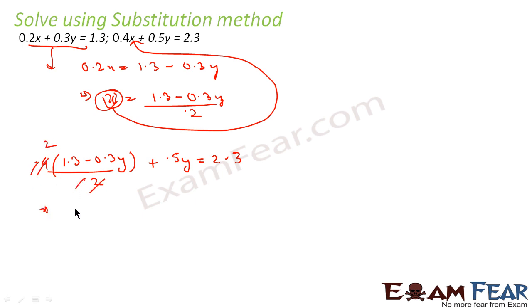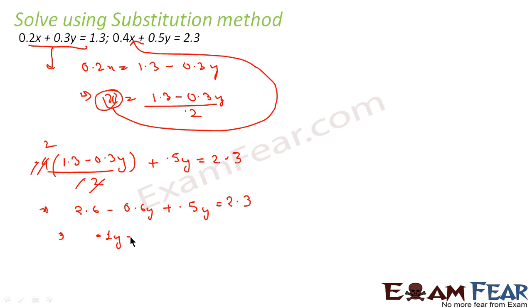This simplifies to 2 times 1.3, which is 2.6, minus 0.6y plus 0.5y equals 2.3. Combining like terms: minus 0.1y equals 2.3 minus 2.6, so 0.1y equals 0.3, giving y equals 3. The 0.6 and 0.5 combine to give 0.1, and moving to the other side gives 0.3, so y equals 3.